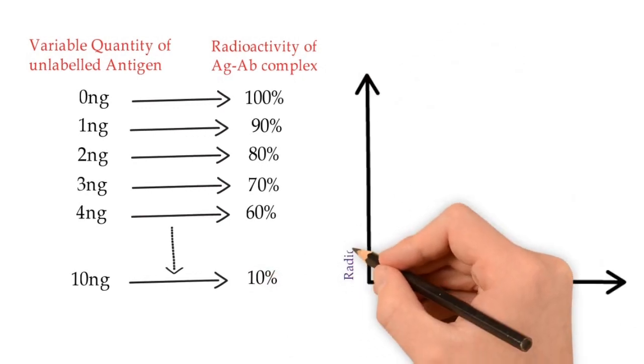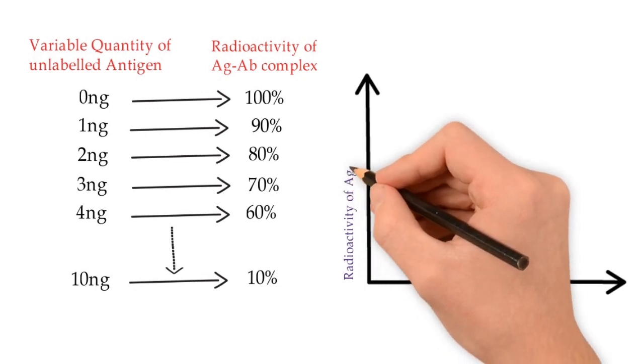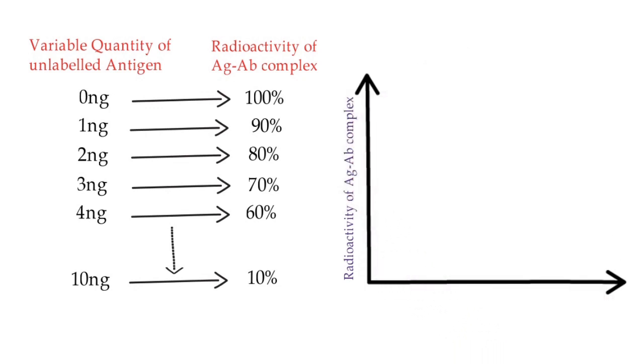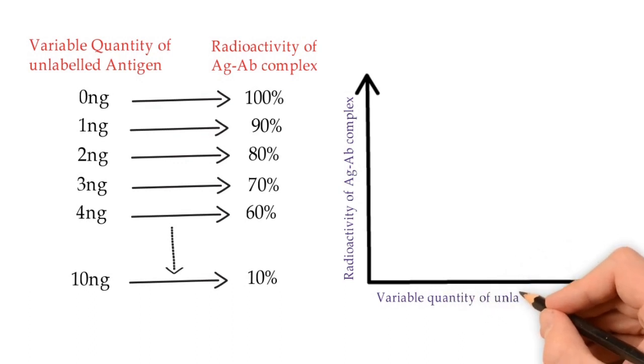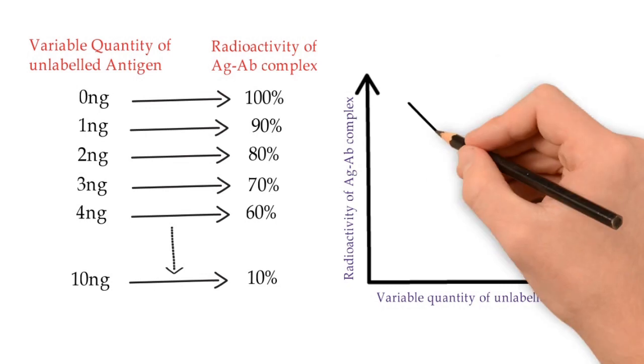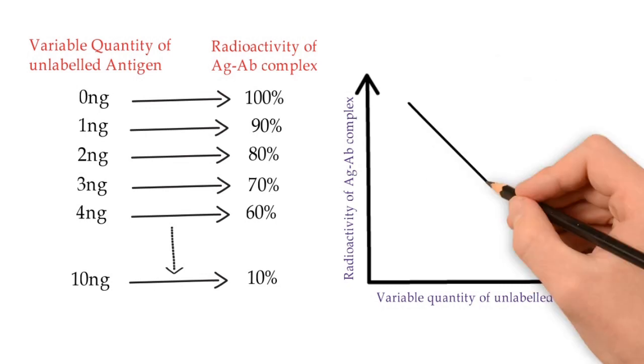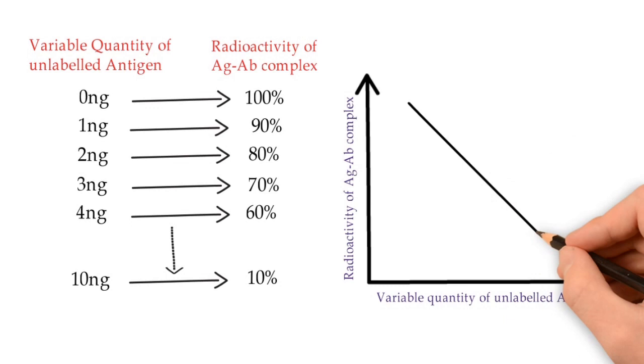Now make a graph with this table having radioactivity of antigen-antibody complex on y-axis and amount of unlabeled antigen X on x-axis. The graph will be in decreasing order as radioactivity is decreasing with increase of unlabeled antigen X concentration.